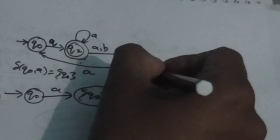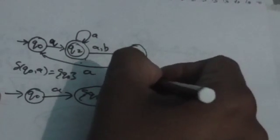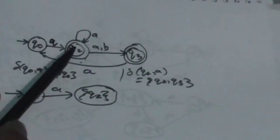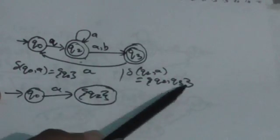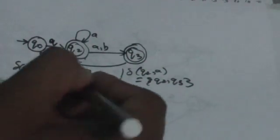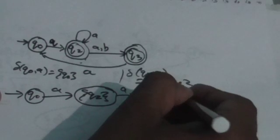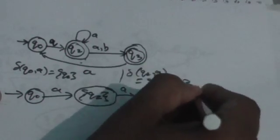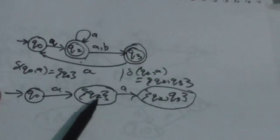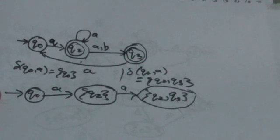Delta(Q2, A) equals {Q2, Q3}. When we apply A to Q2, there are two transitions: one to state Q2 and another to state Q3. So when we apply A we get a set of two states {Q2, Q3}, and we add this transition to the DFA.